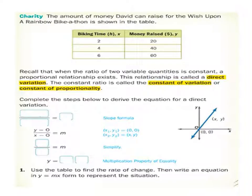The amount of money David can raise for the wish upon a rainbow bike-a-thon is shown in the table. Recall that when the ratio of two variable quantities is constant, a proportional relationship exists. The relationship is called direct variation. If we want to know if it's a direct variation, we can do both at the same time.